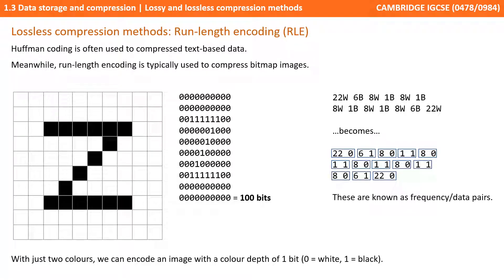We can translate that one step further into what are known as frequency data pairs. So we have the number 22 and the number 0: 22 tells us how many pixels we're going to have, and the next number 0 tells us the colour. So 22 0s means 22 white pixels, and 6 1 means 6 black pixels.